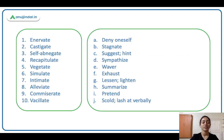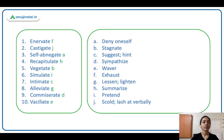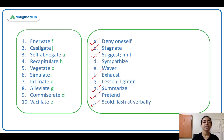Now let's do some match the followings. Pause the video and mark your answers. Enervate is F — exhaust. Castigate is J — scold, lash at verbally. Self-abnegate is A — deny oneself. Recapitulate is H — summarize. Vegetate is B — stagnate. Simulate is I — pretend. Intimate is C — suggest, hint, to inform. Alleviate is G — lessen, lighten. Commiserate is D — sympathize. And vacillate is E — waver, fluctuate, go back and forth.